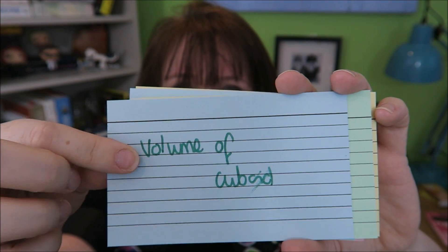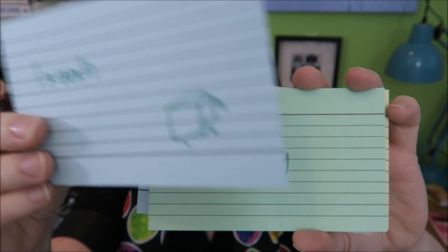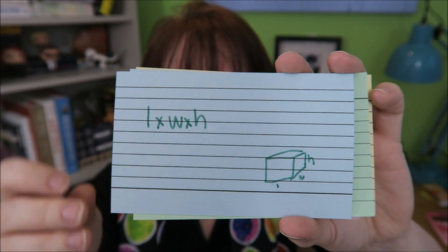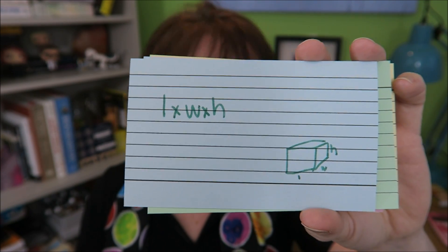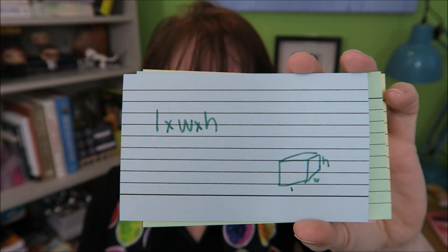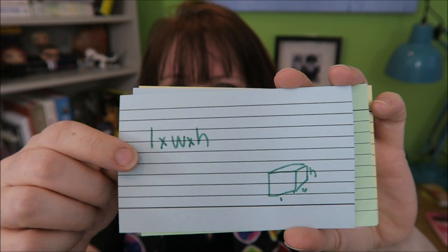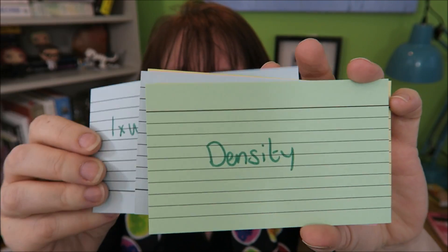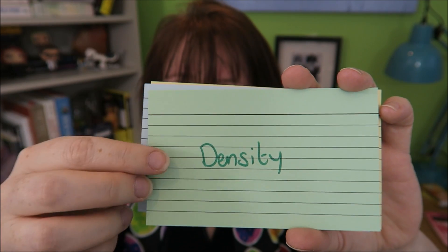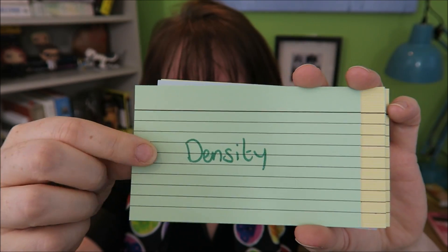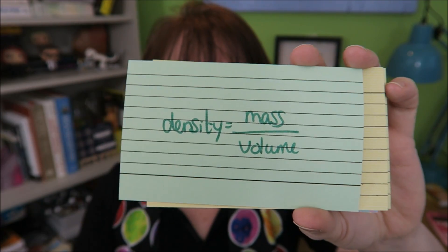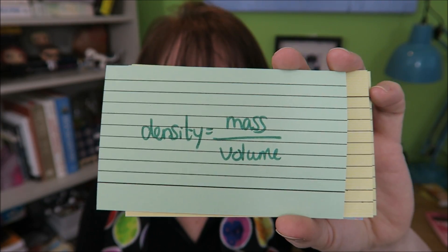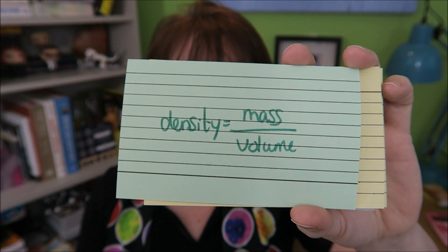The volume of a cuboid is going to be length times width times height. Density is mass over volume.